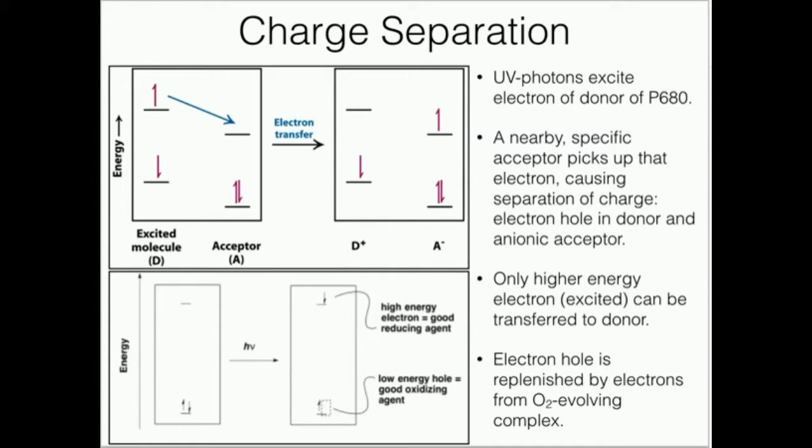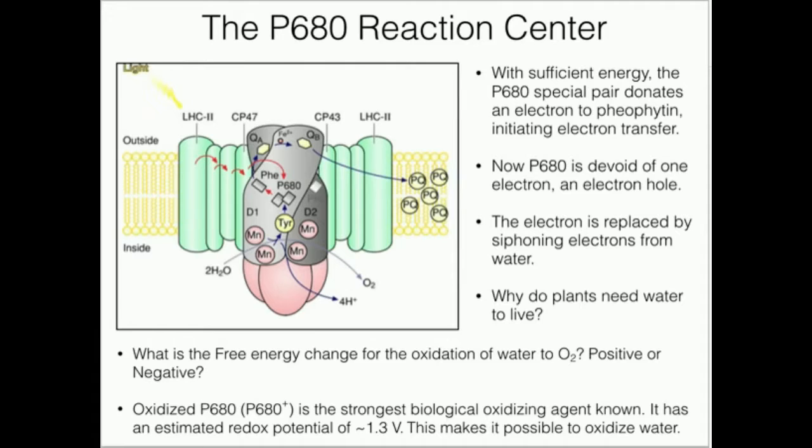It turns out that this electron can be transferred to this acceptor right here. Notice the state over here once we get the electron transfer. Also notice the excited molecule, the P680, which is this D, is now D+. That's what we saw on a previous slide when we were looking at P680+.